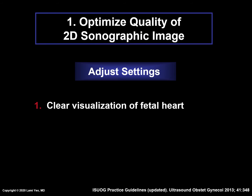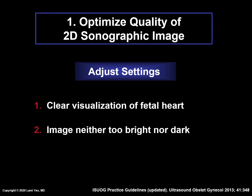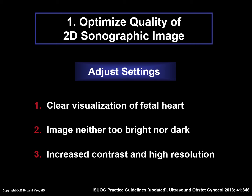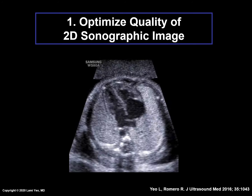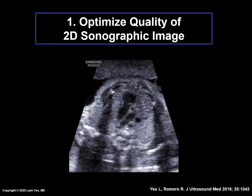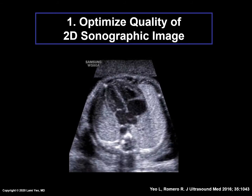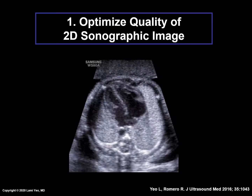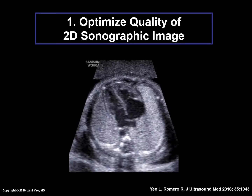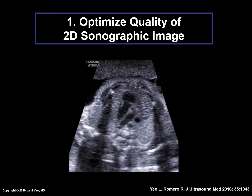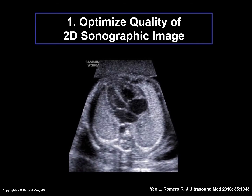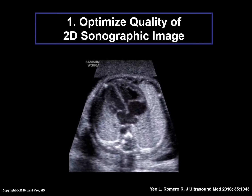The goals are to adjust the ultrasound settings so there is clear visualization of the fetal heart. The image should be neither too bright nor too dark, and should be characterized by increased contrast and high resolution. In this example, the settings have been adjusted so that the fetal heart is clearly seen, the image is not too bright or dark, and the image has both increased contrast and high resolution. So, if a STIC volume is acquired in this case, the image quality will be quite optimal.